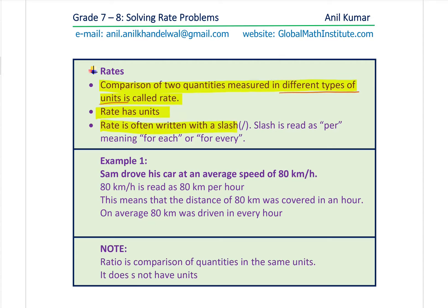Rate is often written with a slash, which you can see here — like kilometers per hour, meters per second. This slash is read as 'per', which is an important word meaning 'for each' or 'for every'. So meters per second or kilometers per hour — you can associate the slash with 'per'.